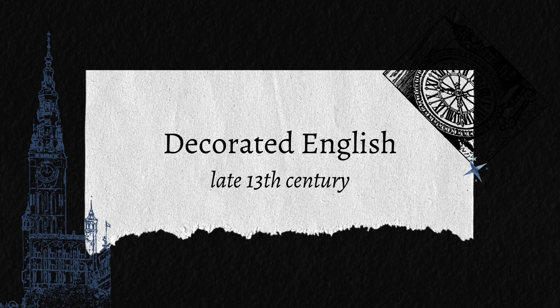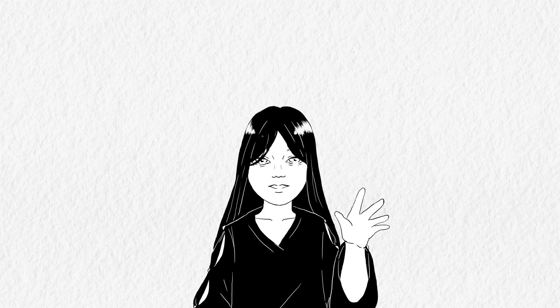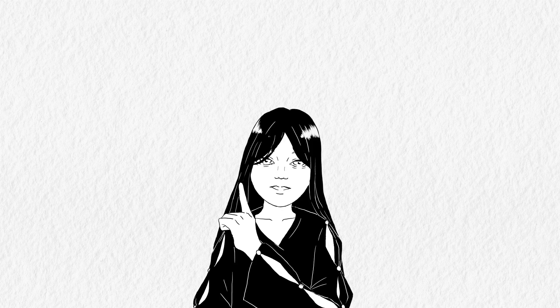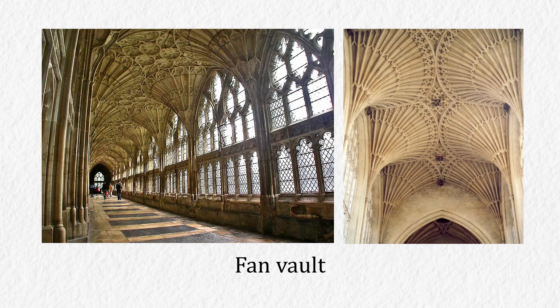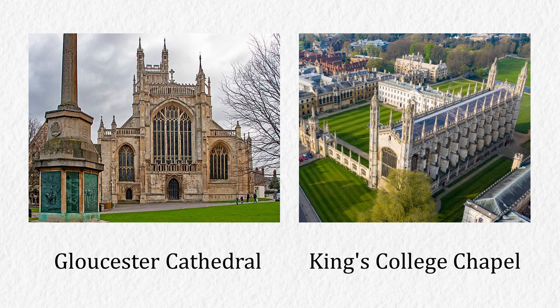Decorated English was in the late 13th to 14th century, roughly the same time as the Rayonnant Gothic in France. The style became more elaborated with geometrical and flowing tracery. What made this period stand out is not only their decoration, but also their fan vaults. English fan vaults are made up of concave ribs that extend from a central point in the shape of a fan. Gloucester Cathedral is the earliest known construction with this type of vaulting. King's College Chapel is another decorated Gothic building with fan vaults.